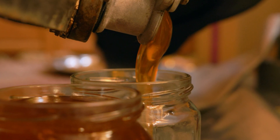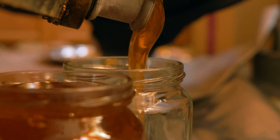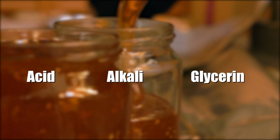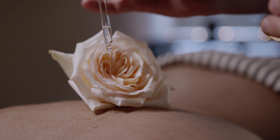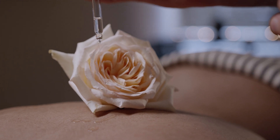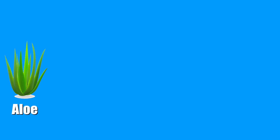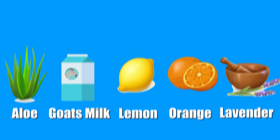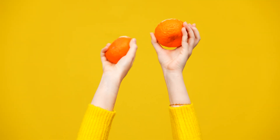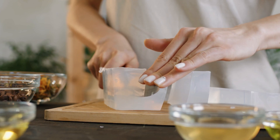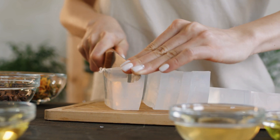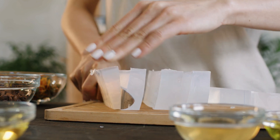Meanwhile, naturally made soaps keep the base ingredients such as acid, alkali, and glycerin, and add skin-safe fragrance oils, plants, and colorants. Many locally made soaps would add aloe, goat's milk, lemon, orange, and lavender, as well as many other skin-safe plants and fruits. Knowing how few ingredients are necessary to produce soap, you can easily make your own soap at home.